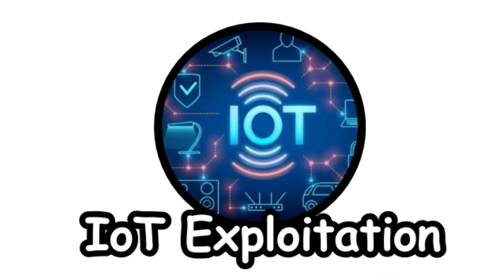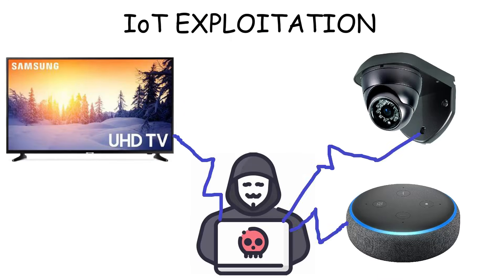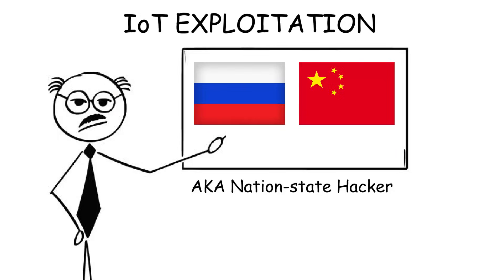IoT exploitation. This is when hackers take control of Internet of Things devices — like smart TVs, speakers, or security cameras — and use them for spying. This is common in some authoritarian countries like China, Russia, and North Korea.